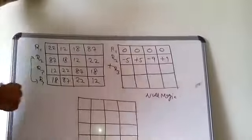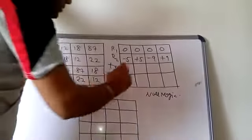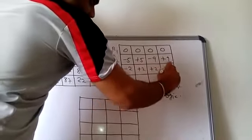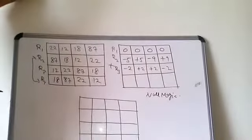Now we will see row number 3. Row number 3 is minus 2 plus 2 plus 2 minus 2. Again, the total is 0.